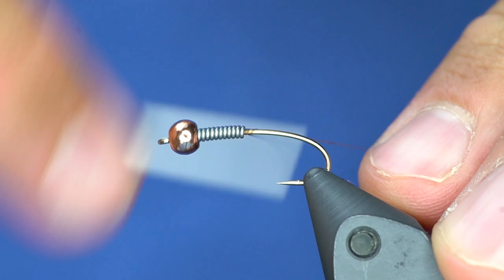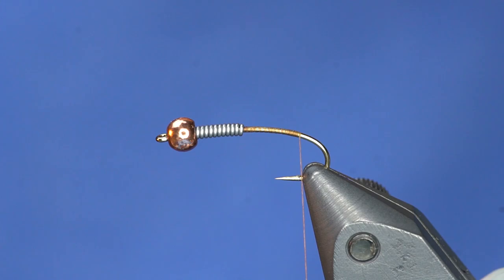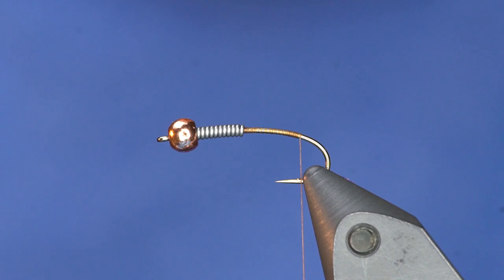The thread is going to just be Uni 8/0 Camel. And I'm going to wrap down the bend a little bit. Until about right there. So that when I hang the thread it's going to be right where I mash the barb. Yes we have gotten a little bit of hate for not mashing barbs in videos. So we did it. Haters feel loved right now.